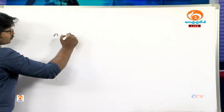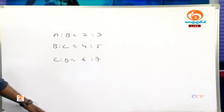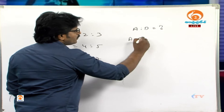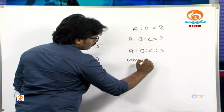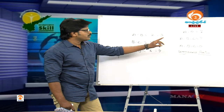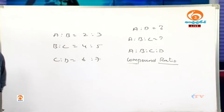Now we have three ratios: A is to B equals 2 is to 3, B is to C equals 4 is to 5, and C is to D equals 6 is to 7. We can be asked to find the value of A is to D, or A is to B is to C, or A is to B is to C is to D, or the compound ratio.